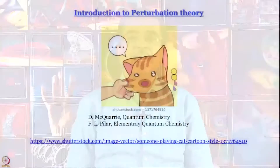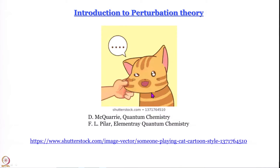There are two kinds of approximation techniques popular in quantum mechanics: perturbation theory and variation theory. We are going to start with perturbation theory. You might wonder where the cartoon of a cat getting its cheek pulled comes in — we will see. Note that this is the unperturbed cat; the owner has only tucked at one cheek, so only that portion is distorted. The rest of the cat is unchanged. Remember this analogy.